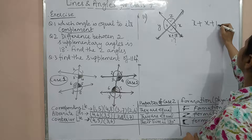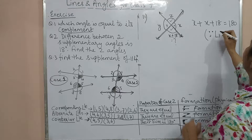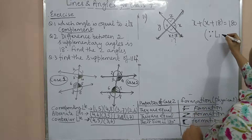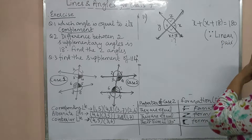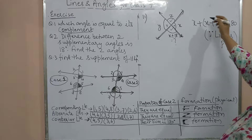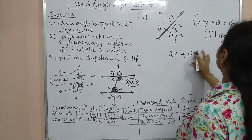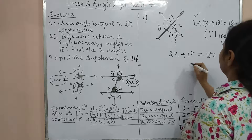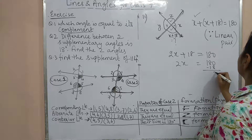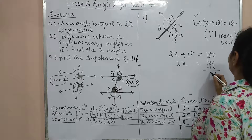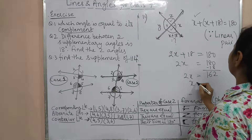From X + (X + 18) = 180: 2X + 18 = 180, so 2X = 162, giving X = 81 degrees. Therefore angle 1 = 81 degrees, and angle 2 = 81 + 18 = 99 degrees.